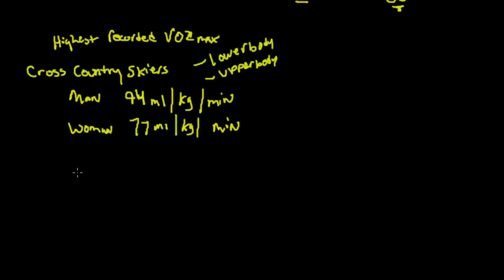Let's say you had an individual with 94 milliliters of oxygen per kilogram of body weight per minute. So they had a really high VO2 max, but you had somebody like Lance Armstrong at 88. We're just going to say somebody like Lance Armstrong.